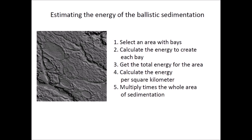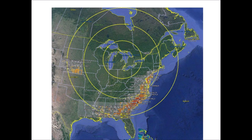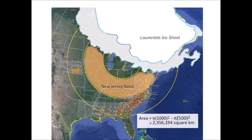However, we have to take into consideration that the ice bombardment was not distributed evenly. The problem of uneven distribution of impacts can be addressed by dividing the landscape into circular bands. This image shows three circles with a center at Saginaw Bay and radii of 500, 1000, and 1500 kilometers. We can calculate the energy of the secondary impacts per unit area in each band and multiply times the area of the band. The first circular band between the 500 and 1000 kilometer mark includes New Jersey. The Laurentide Ice Sheet covered Canada at the time of the extraterrestrial impact, so the secondary impacts on the ice sheet left no trace. Nevertheless, the calculation assumes that the complete band received a typical number of impacts. This band has an area of 2,356,194 square kilometers.